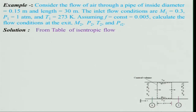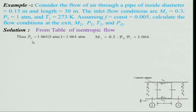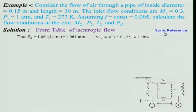From the isentropic flow table corresponding to M1 = 0.3, we can get PT1/P1 = 1.064. So PT1 = 1.064 atm — not much different from static pressure since the flow is very low subsonic. To estimate M2, since we know the length and friction factor, we need to use the sonic reference condition approach, the same way we did for heat addition.